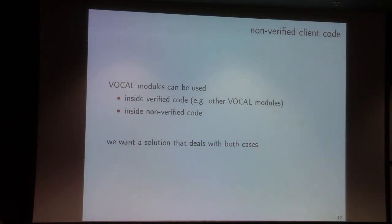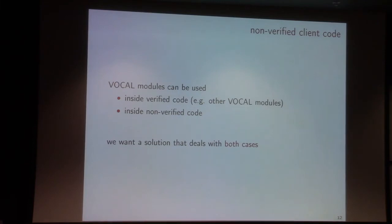What about non-verified client code? In the context of Vocal, I've been equipping my functions with preconditions to limit the possible sizes in which the function can execute. But I'm going to give my library to non-verified clients. What happens if my client uses a function that I've so carefully verified with the wrong values? So we want a solution that deals with both cases.